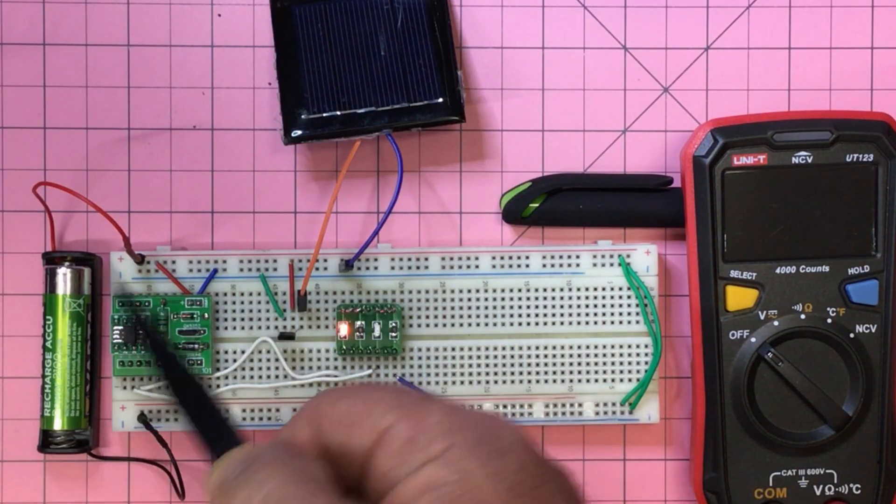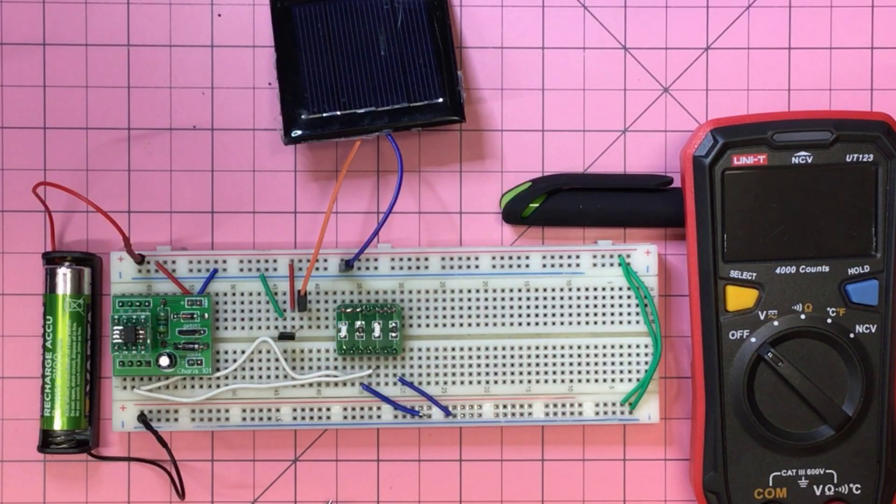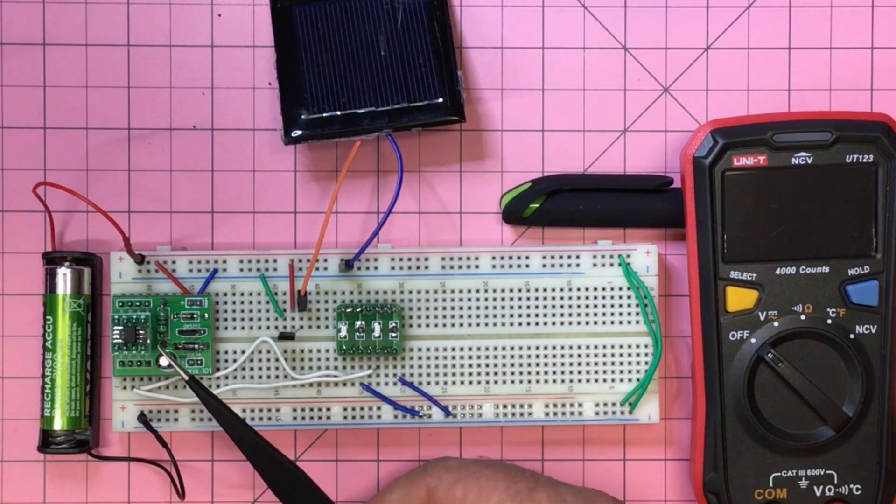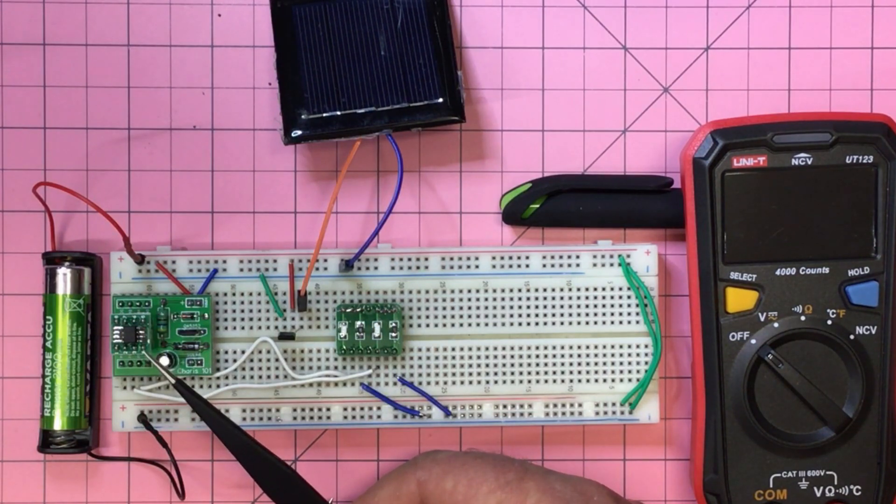Feeds into this rail here which is to the nickel metal hydride battery. But also the nickel metal hydride battery through the rail feeds this QX5252 which outputs the stable voltage of around five volts to the ATiny13.